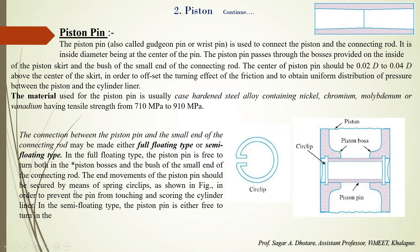Now, before going to the piston pin, there is one more thing: there are some ribs provided inside the piston. Generally four to six ribs are provided inside the piston. The connecting side thrust is transmitted to the piston skirt through the piston pin boss. In order to distribute this thrust load properly on the piston skirt and to avoid distortion of the skirt, reinforcement ribs are provided from the centerline of the piston pin, extended around the piston skirt.